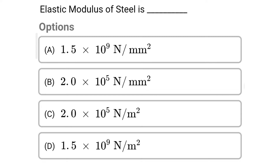First question: Elastic modulus of steel is — Option A: 1.5×10⁹ N/mm²; Option B: 2.0×10⁵ N/mm²; Option C: 2.0×10⁵ N/mm²; Option D: 1.5×10⁹ N/mm². The correct answer is Option B: 2.0×10⁵ N/mm².